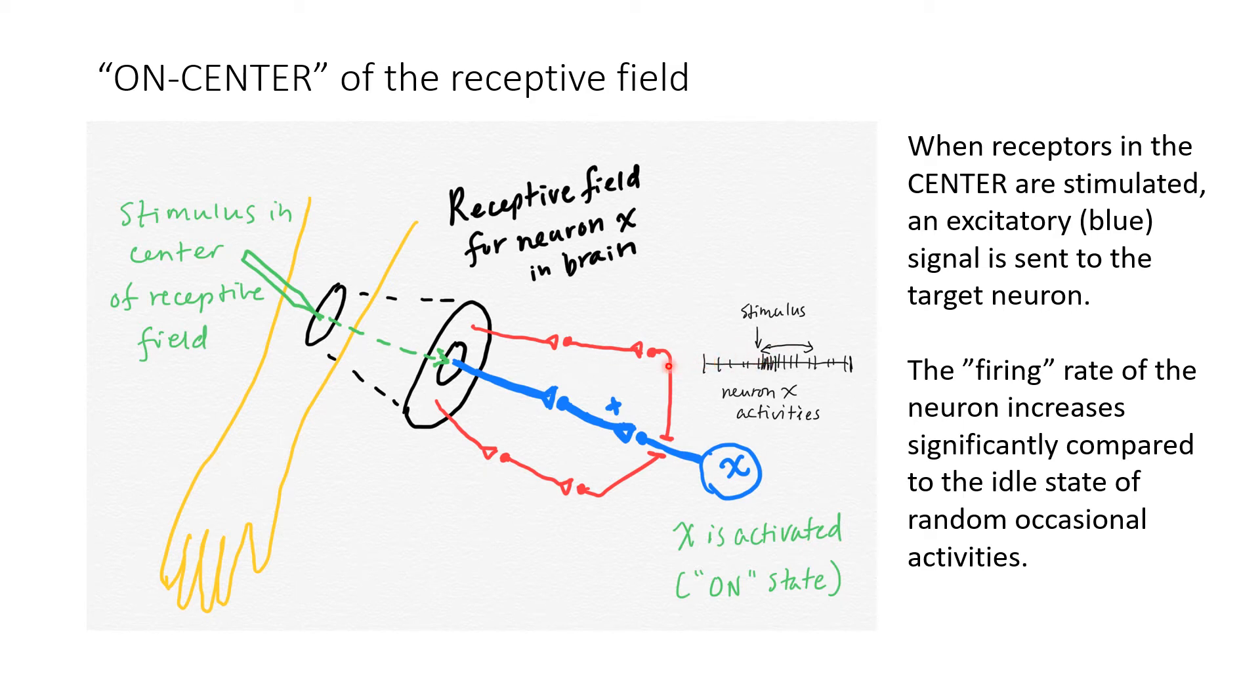each tick mark represents an excitation of the neuron. In a normal or idle state, a neuron might fire occasionally. But when the center of its receptive field is directly stimulated, the neuron is excited repeatedly in quick succession for the duration of the stimulation. Once the stimulation is gone, the neurons return to a random firing idle state.